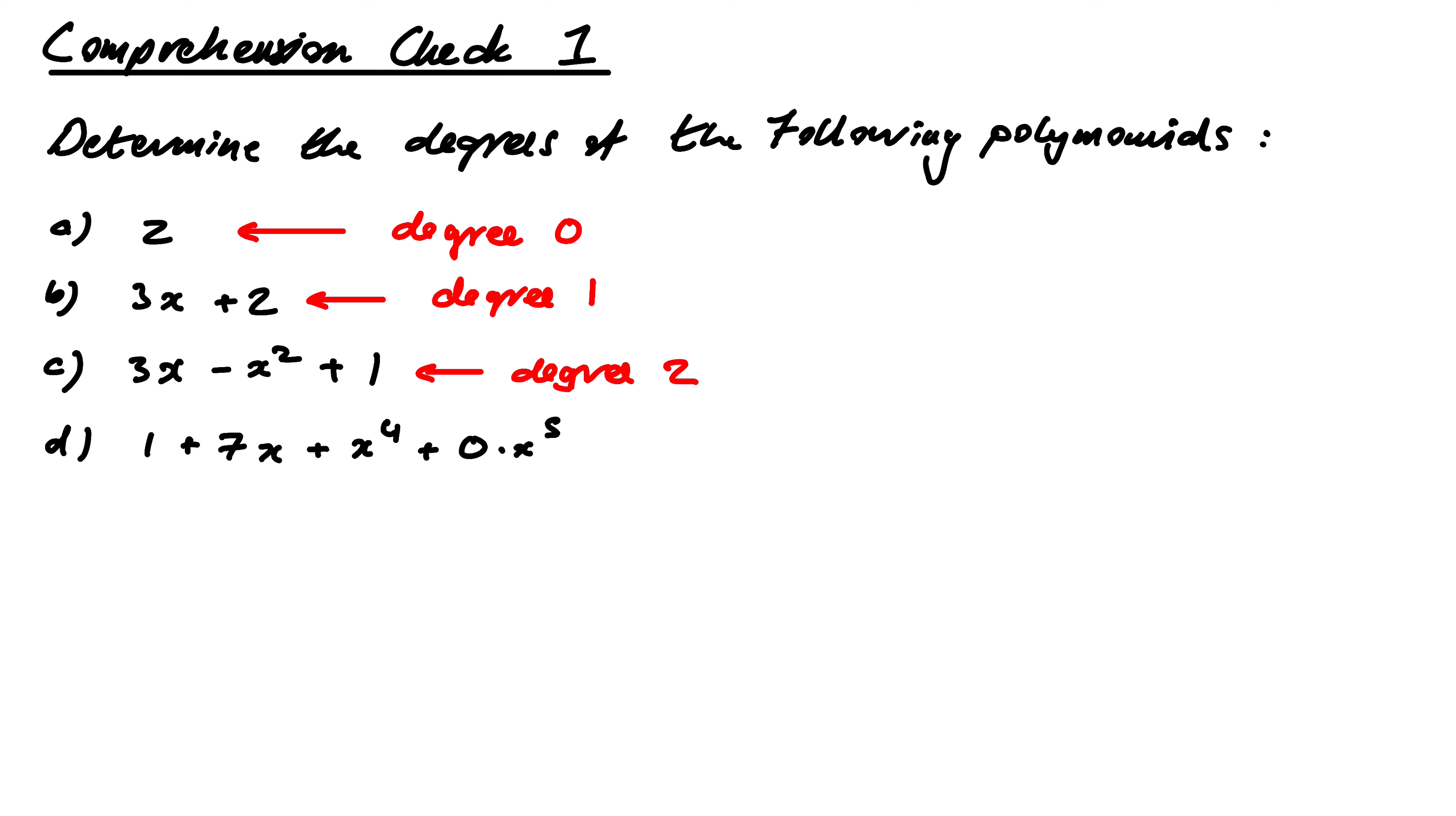Finally, what degree is this one? So this is an easy one to mess up. It looks like it's degree 5 because I can see an x to the 5, but there's a 0 here. So that basically means the whole thing is irrelevant, right? It disappears.